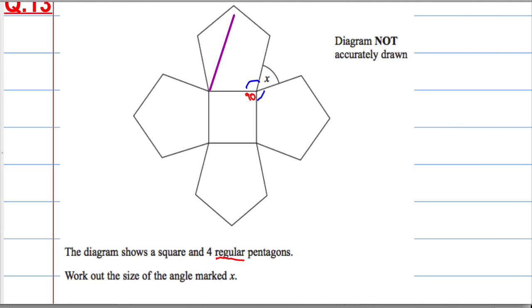What I can do is split the shape into triangles starting from the same point. So there's one triangle here, there's two triangles, and that's a third triangle. So we've got one, two, three triangles.